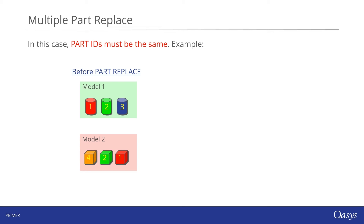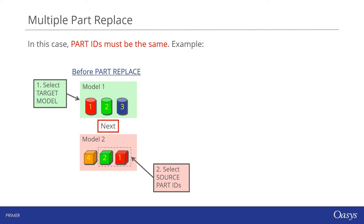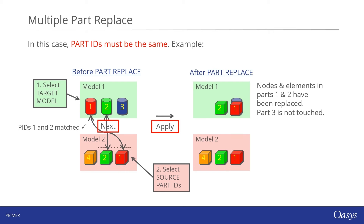We can visualise a multiple part replace operation using a similar example. We select our target model, model one, then pick out part IDs one and two from our source model. Note that in this case we've taken care to renumber parts from the source model so the part replace tool can correctly map parts onto the target model. After the operation is complete, parts one and two have been updated, while part three has been left unmodified.